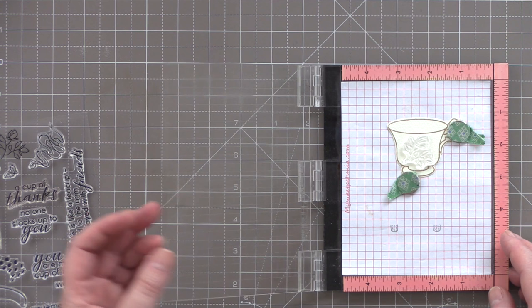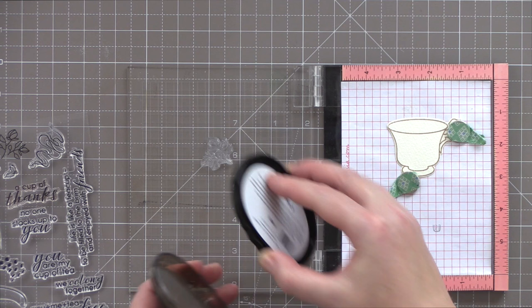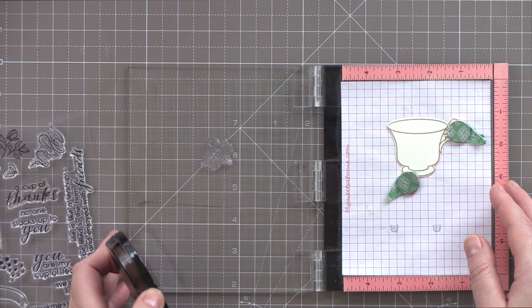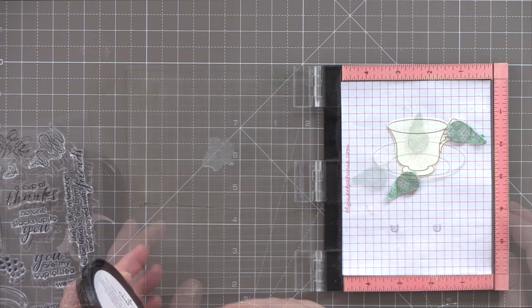The vintage teacups that I remember my mother and grandmother having not only had the gold accents which I'm representing with the gold heat embossing but they also often had small flowers dotted around the cup and the saucer. So I've taken the larger flower from the vintage teacup set and I'm going to stamp that in some Altenew blush ink onto the front of the teacup.